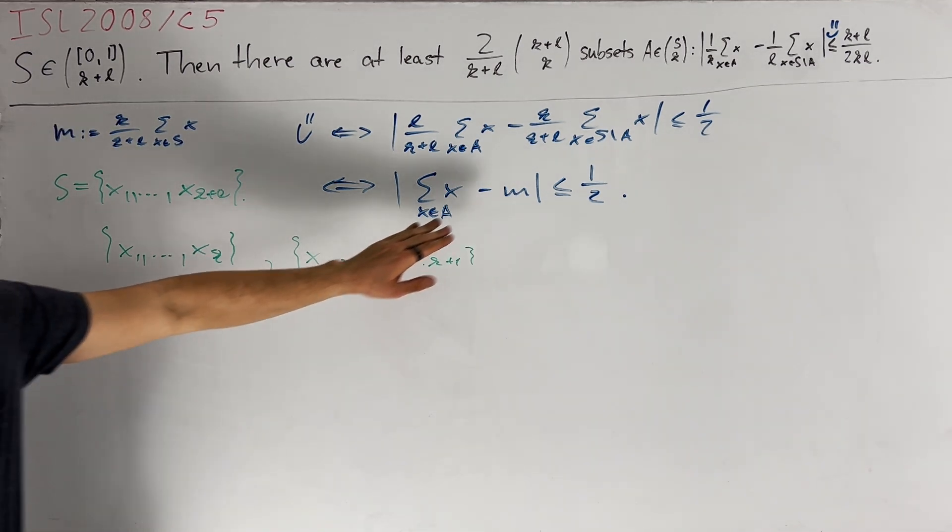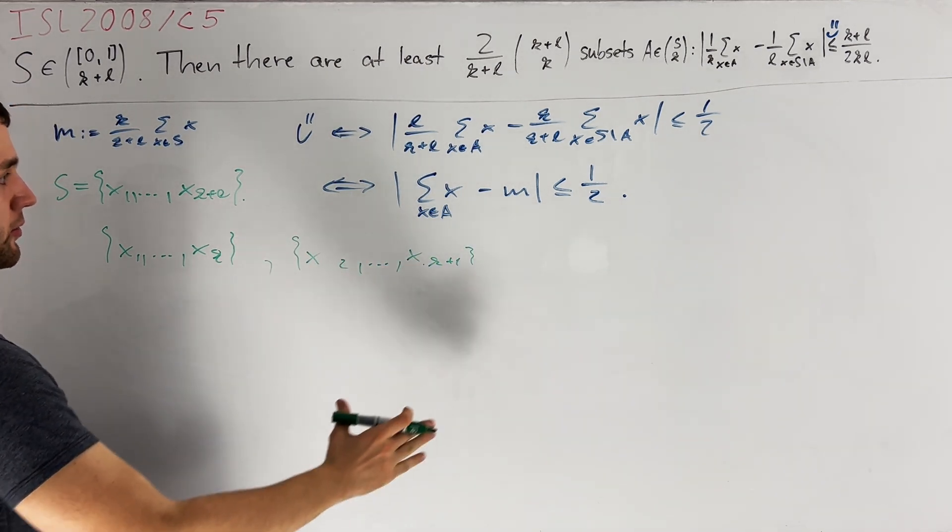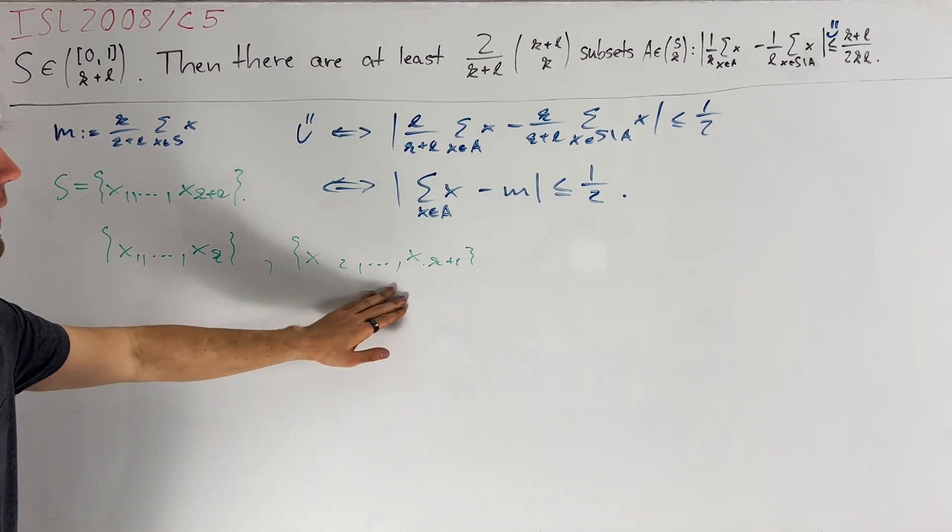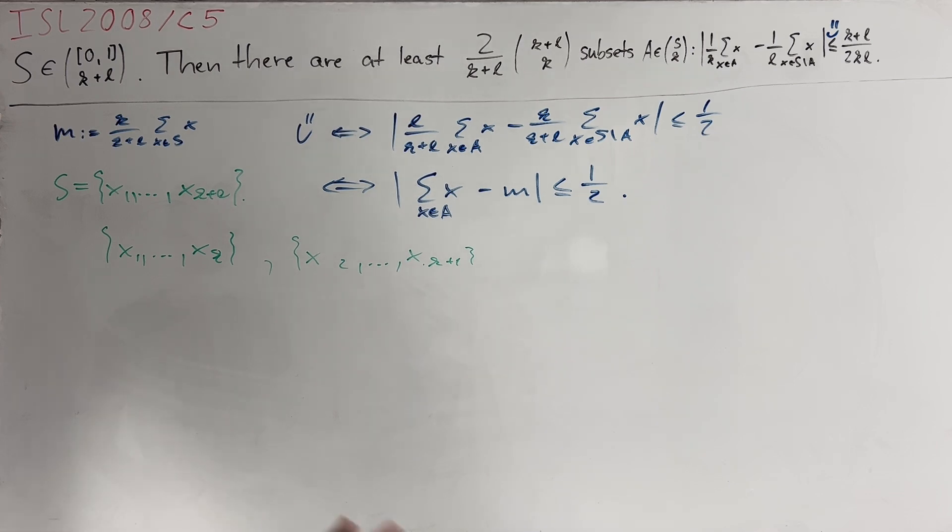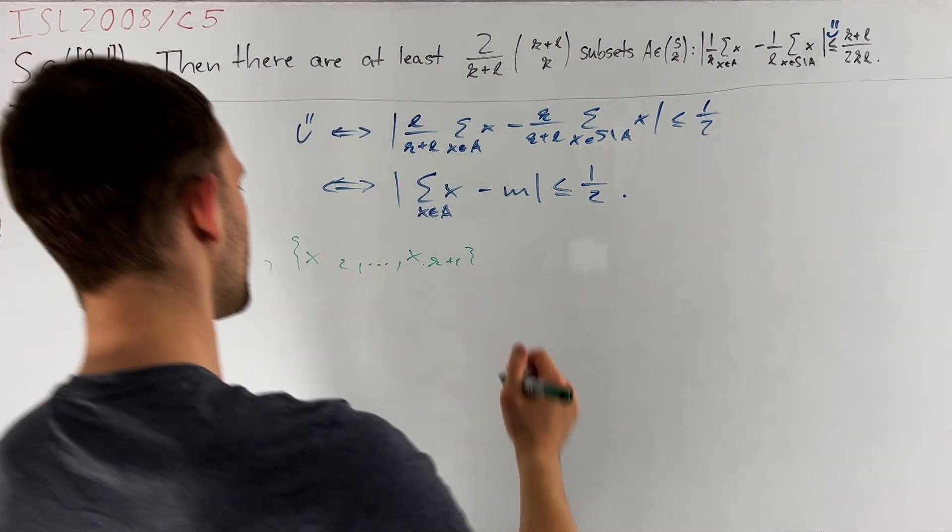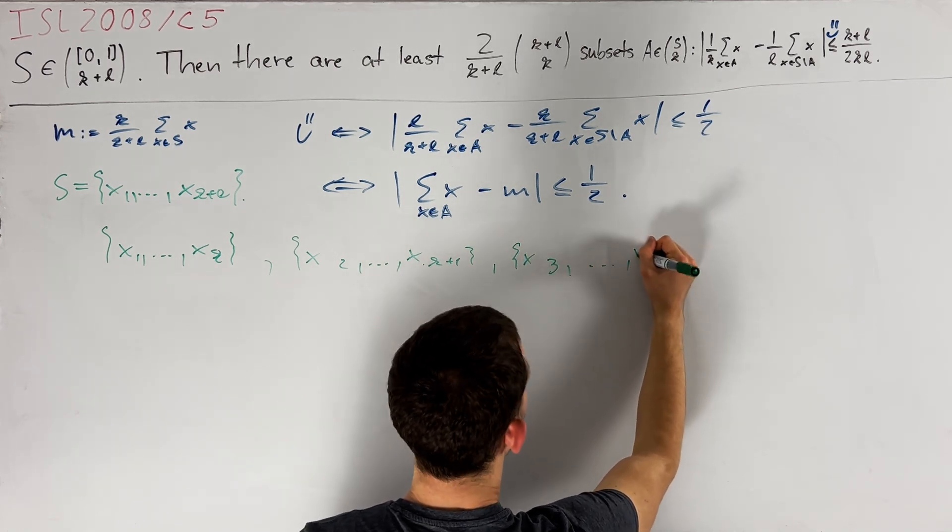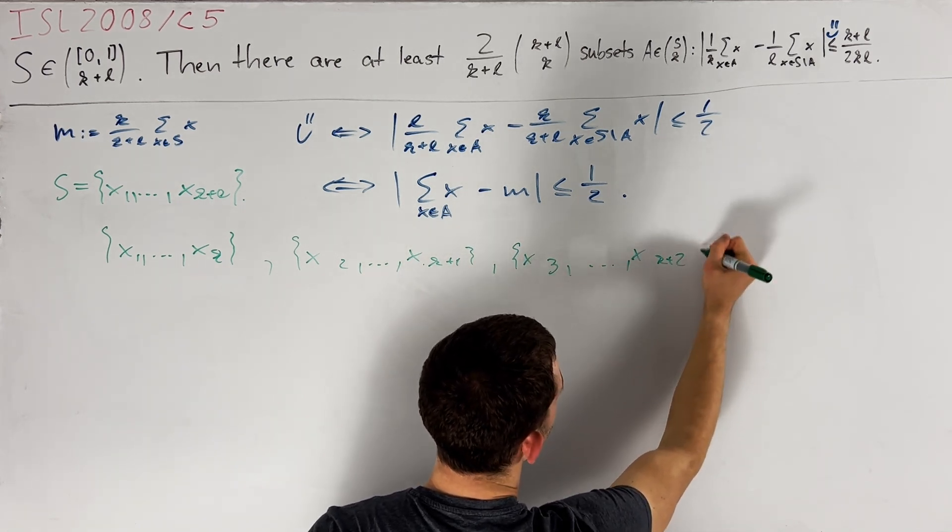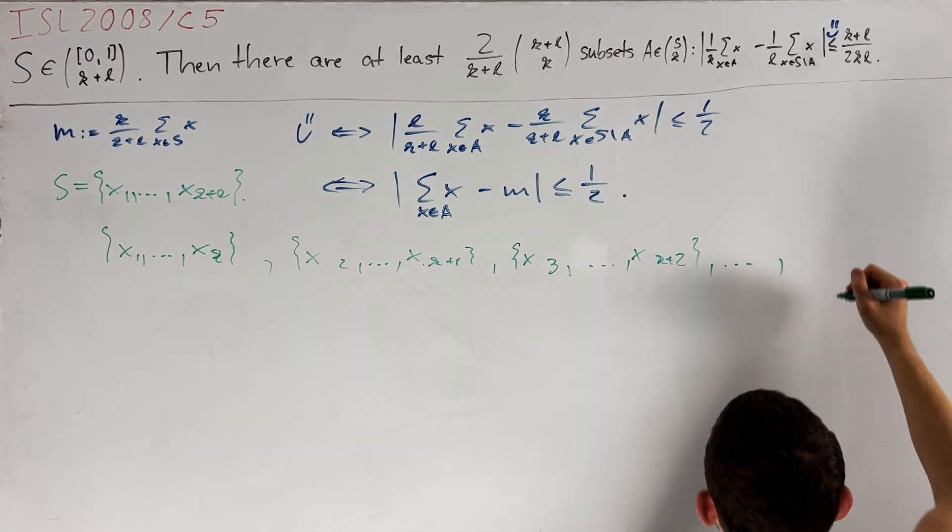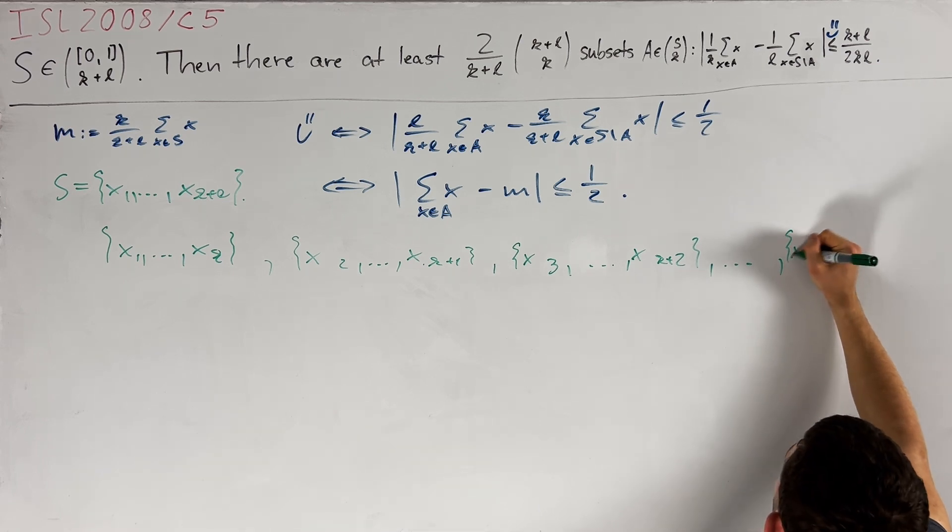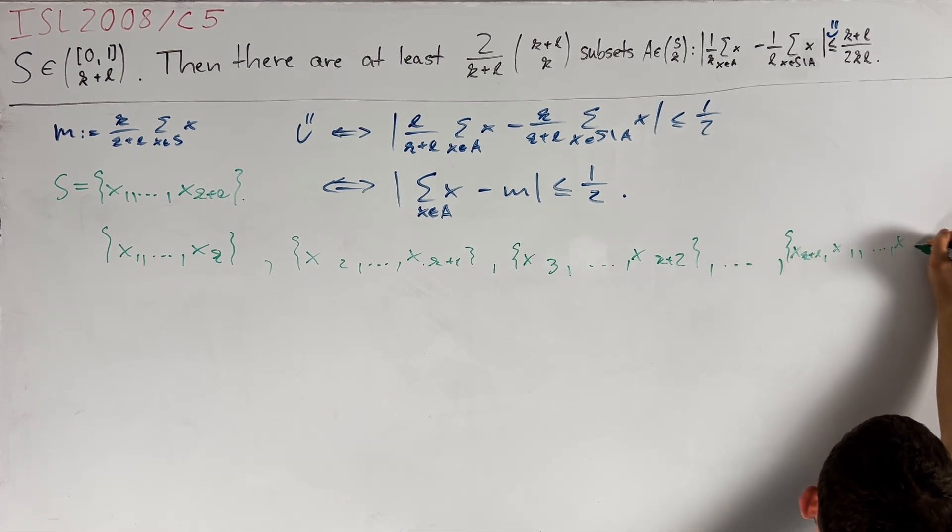If one of these sets already satisfies Smiley, that would be great because we want to show that many sets do, but for now we don't really have any control over that because we have to introduce M somehow. There's a nice way to achieve this, namely by continuing this perturbation in a cyclic way. So we continue with X3 all the way up to XK plus 2 and also continue this until our last set will be XK plus L, X1 up to XK minus 1.